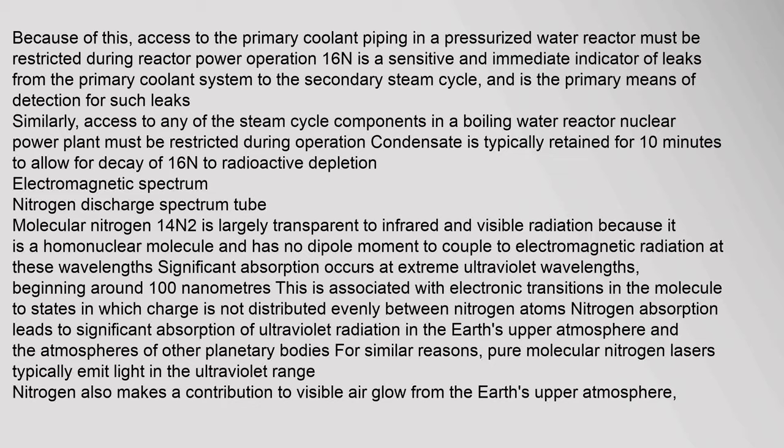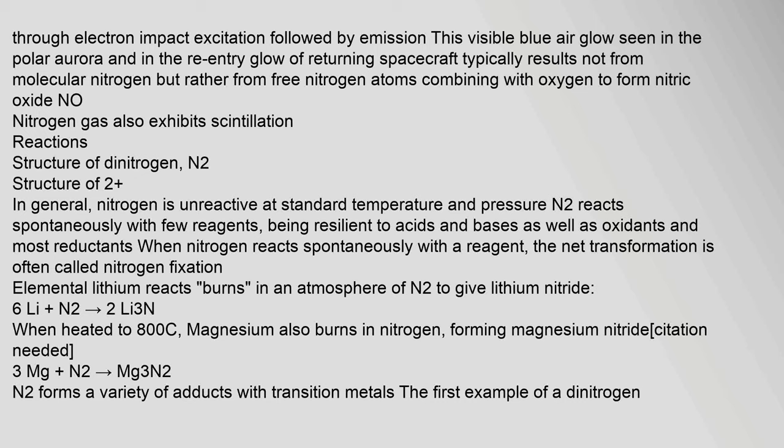Significant absorption occurs at extreme ultraviolet wavelengths, beginning around 100 nm, associated with electronic transitions to states in which charge is not distributed evenly between nitrogen atoms. Nitrogen absorption leads to significant absorption of ultraviolet radiation in the Earth's upper atmosphere. Pure molecular nitrogen lasers typically emit light in the ultraviolet range. Nitrogen also makes a contribution to visible airglow from the Earth's upper atmosphere through electron impact excitation. The visible blue airglow seen in the polar aurora typically results not from molecular nitrogen but from free nitrogen atoms combining with oxygen to form nitric oxide.